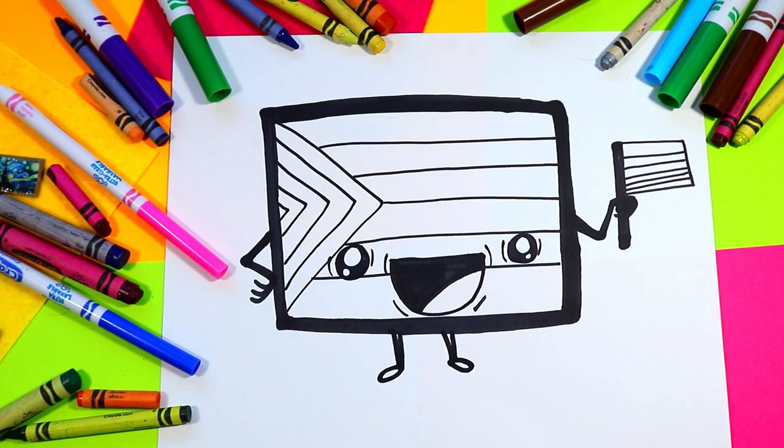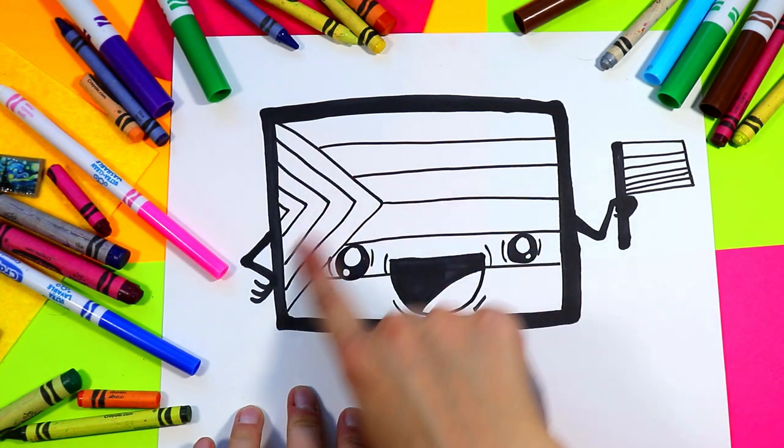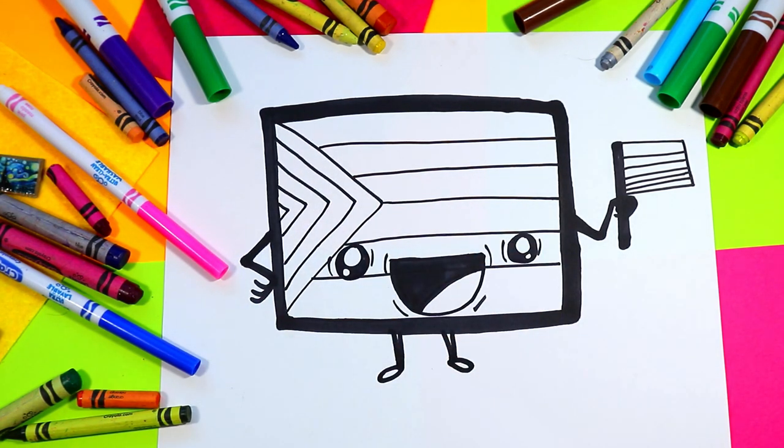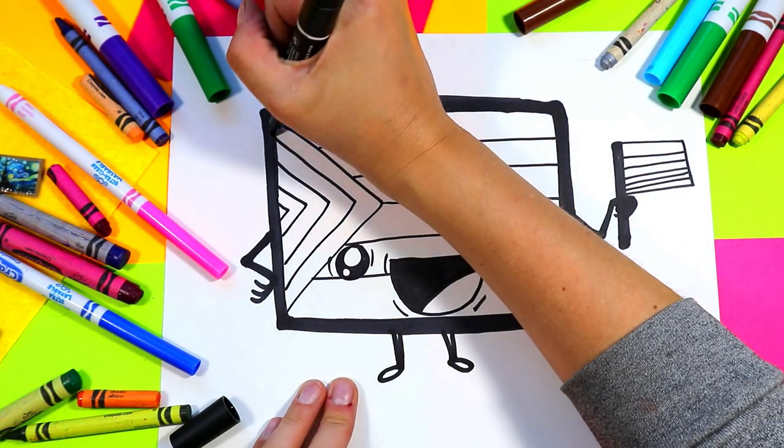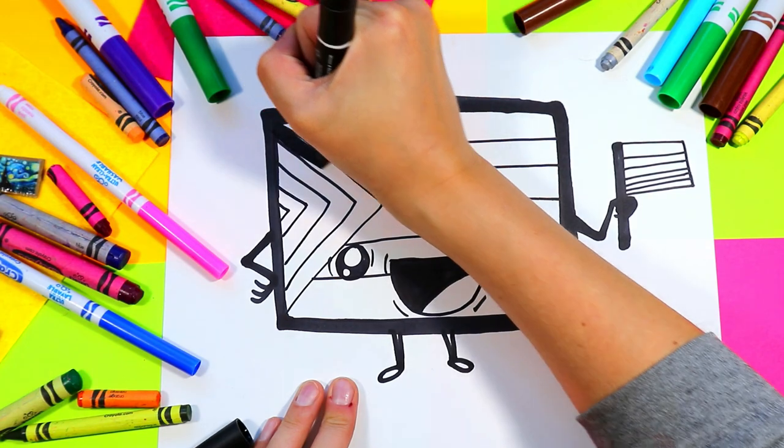Once you're done you can go ahead and we're gonna start off with this new part on the flag. We're gonna grab a brown and our black. We're gonna start off with the black. We're gonna color this first stripe black.